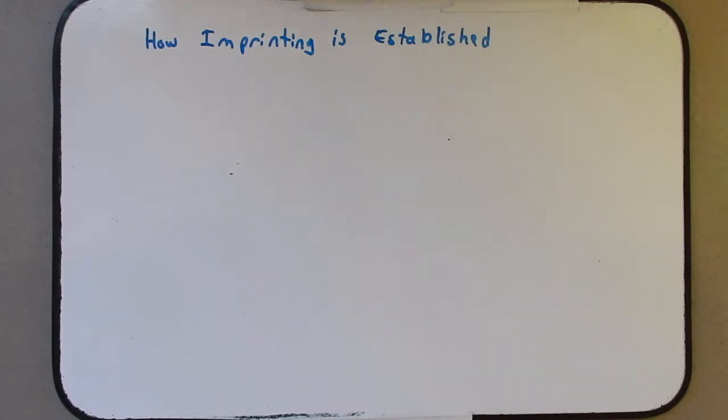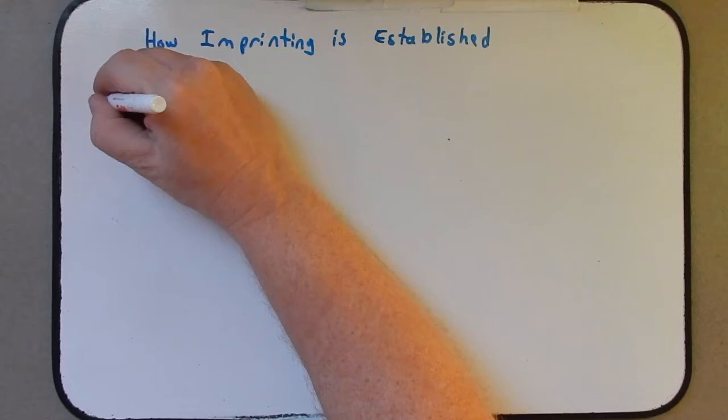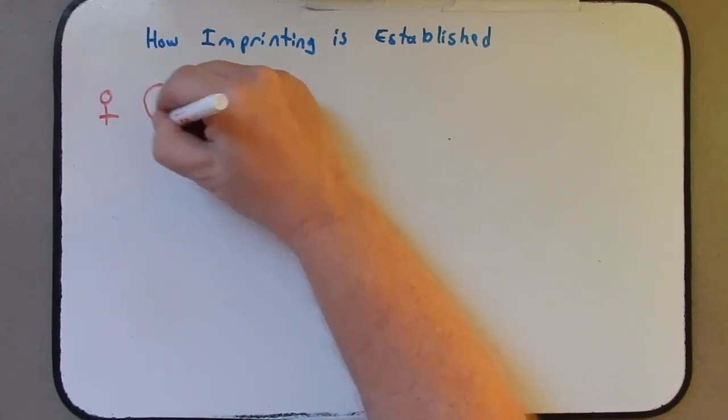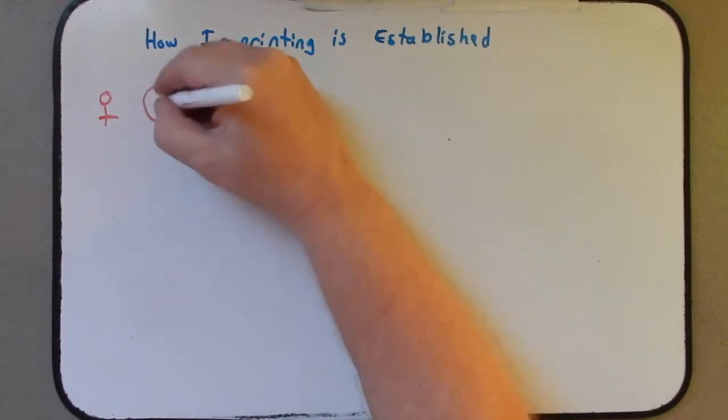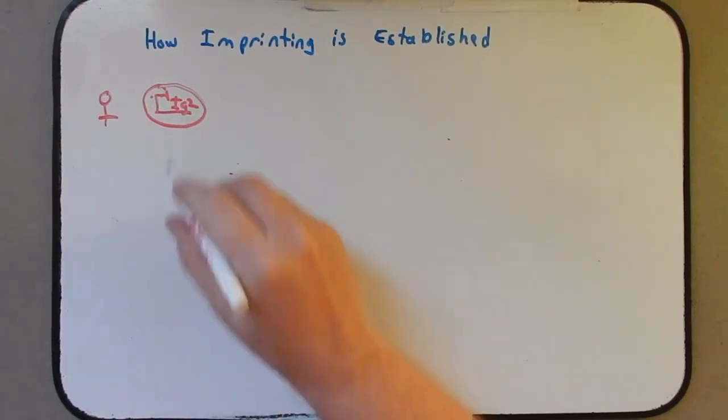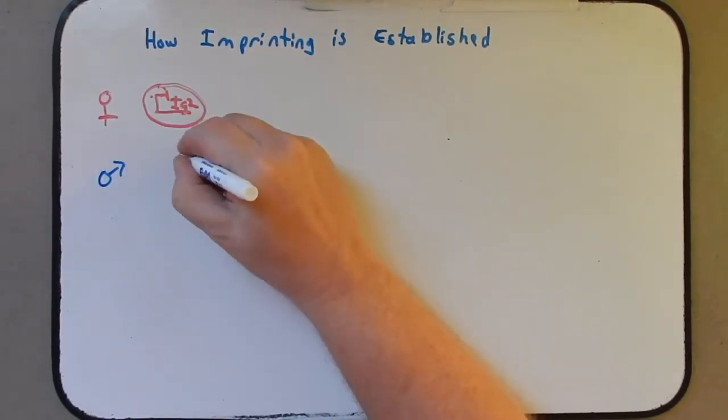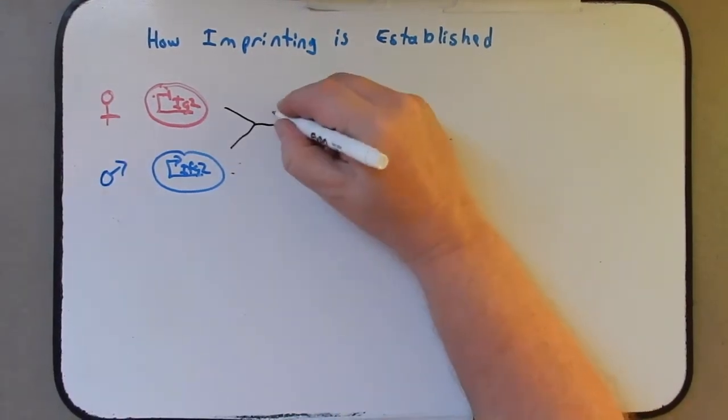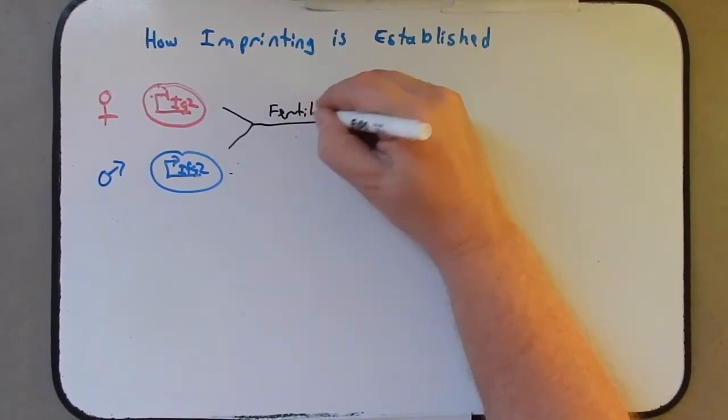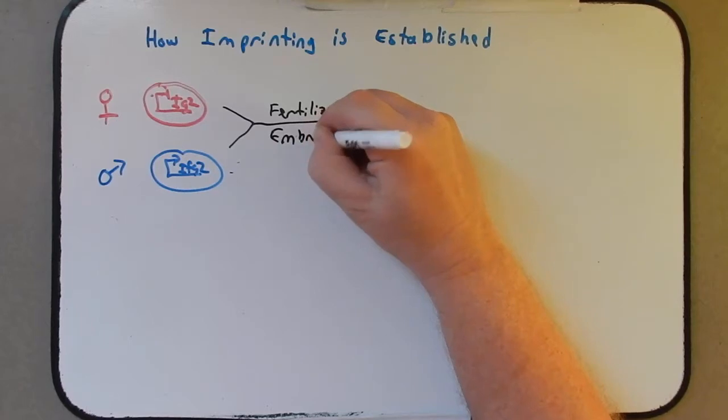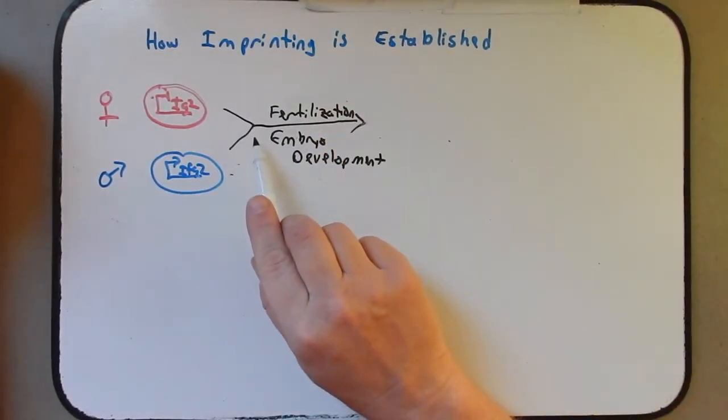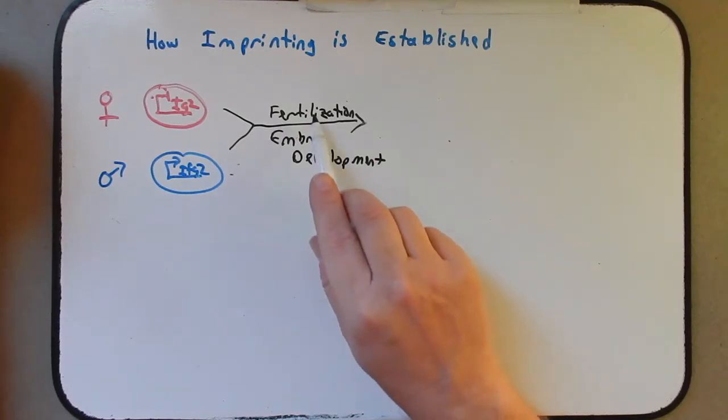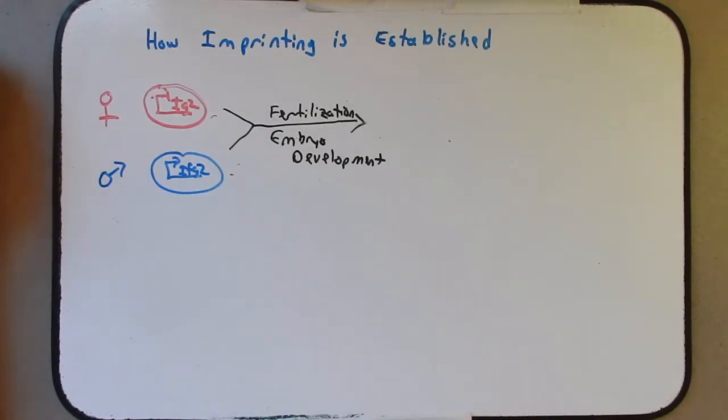Now we know that the imprinting has to change at some level, and the reason we know that is because if we think about the maternal and paternal copies of these imprinted genes, and we'll stick with our friend here IGF. Remember the maternal copy is not expressed and the paternal copy is expressed. Now we know then that after they have fertilized, so in fact let me write here fertilization and embryo development. Now we'll talk throughout this podcast what happens during fertilization and early embryonic development to the expression of imprinted genes and other methylated genes.